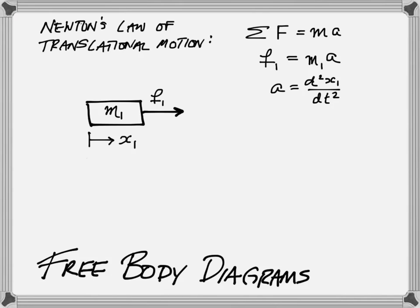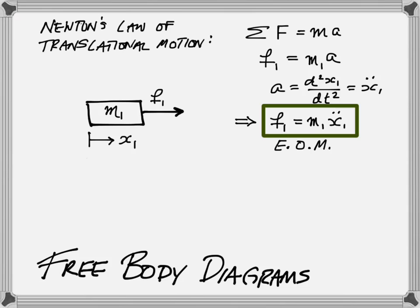We can substitute that value for A into the equation for F1, and we get X1 double dot as an abbreviation for A. So now we can express this as F1 equals M1 times X1 double dot. This thing in the green box is the so-called equations of motion, or EOM. This equation of motion tells us, with respect to time, how we expect the mass to be moving as we pull this force.